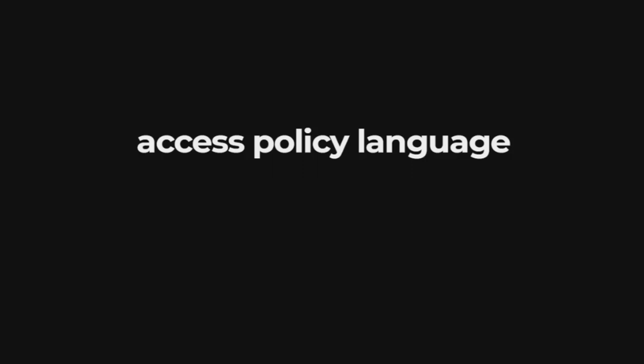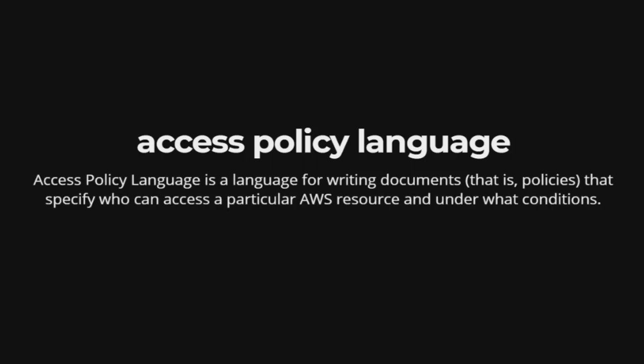Access Policy Language. Access Policy Language is a language for writing documents, that is, policies, that specify who can access a particular AWS resource and under what conditions.